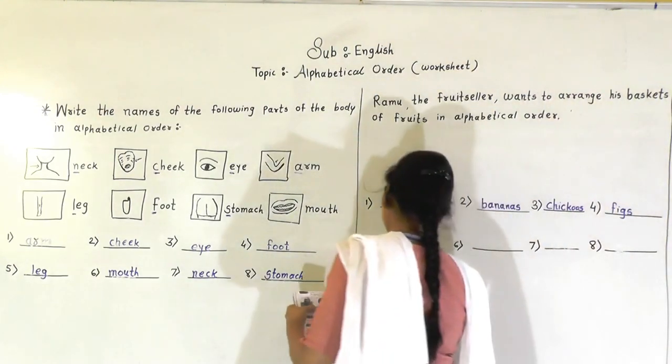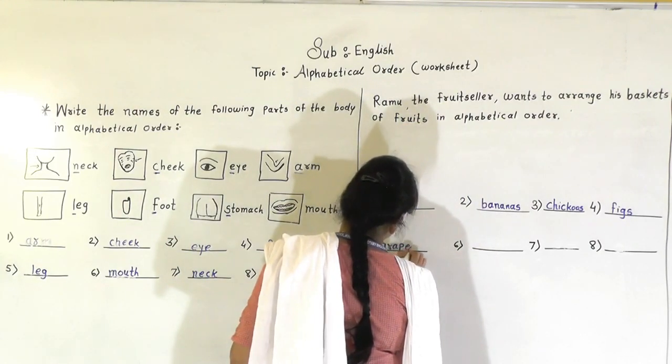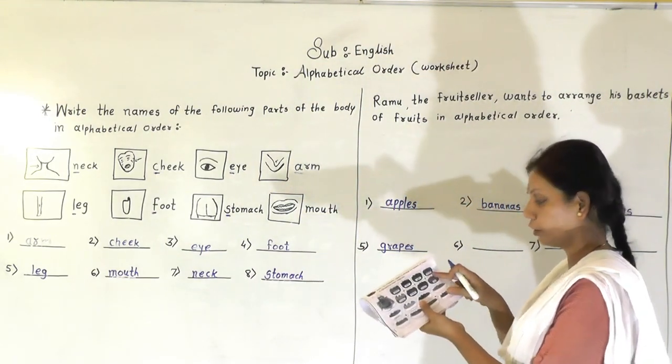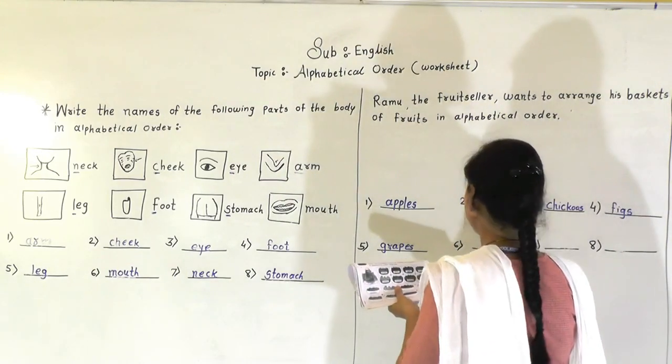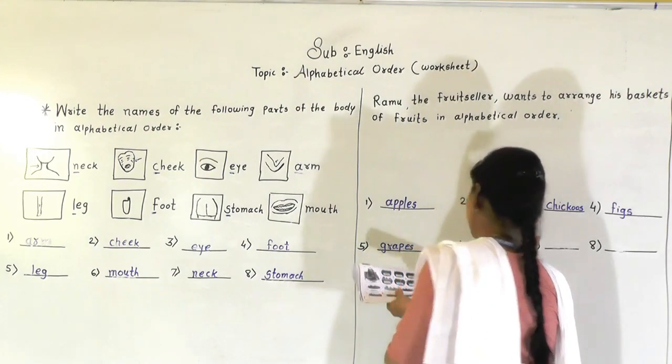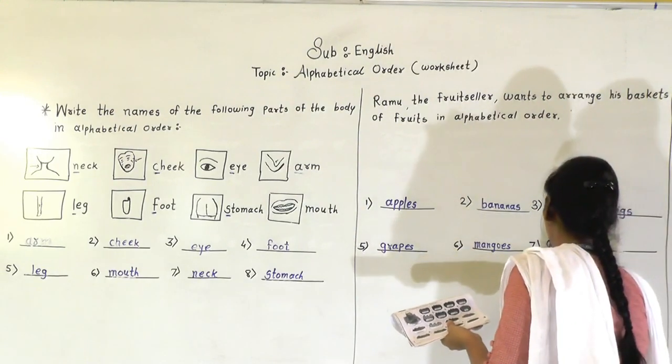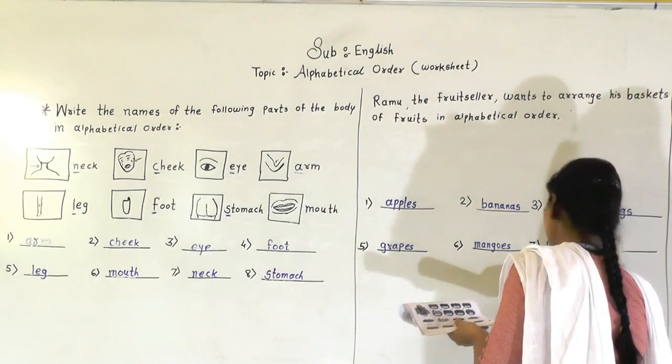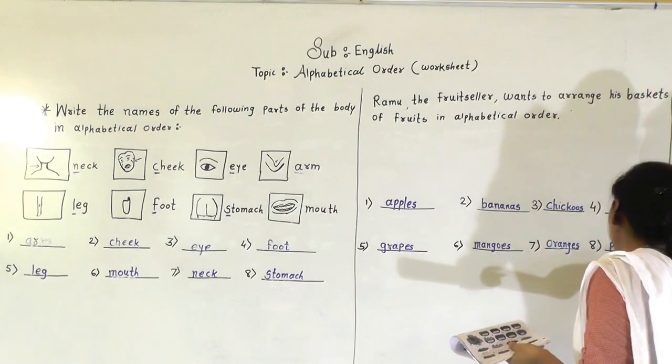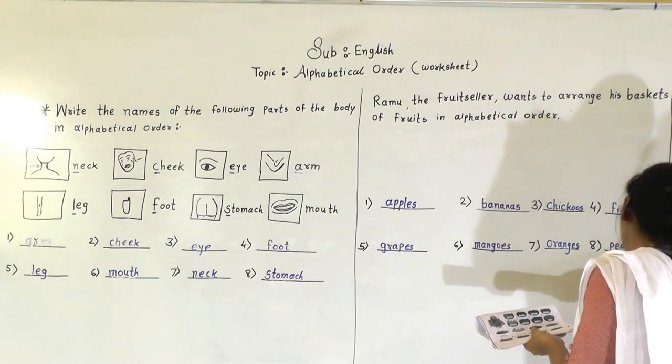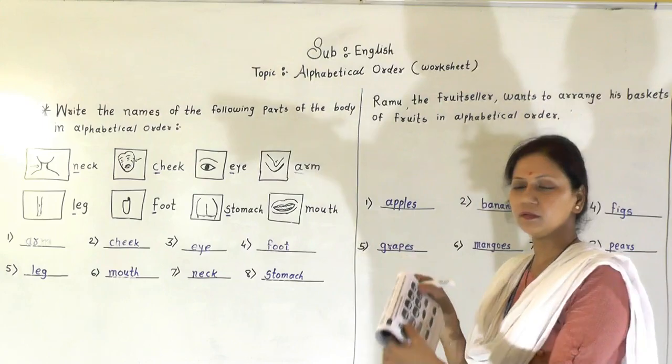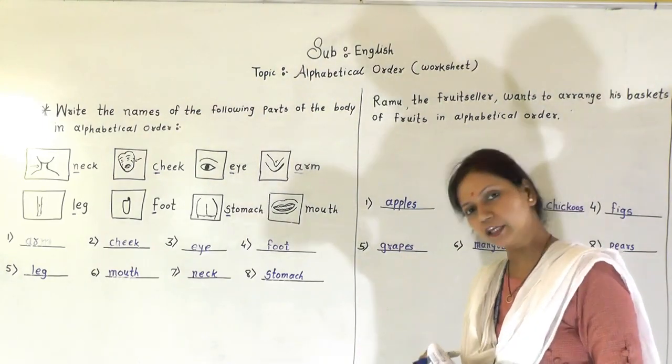After F, G. Grapes. Then oranges. O-R-A-N-G-E-S, oranges. And the last word is P-E-A-R-S. Okay, I hope you understood this. So like this way you have to write down, this was in an alphabetical order. Thank you, have a nice day.